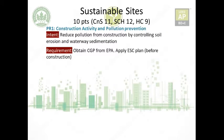PR1 is Construction Activity and Pollution Prevention. The intent is to reduce pollution from construction by controlling soil erosion and waterway sedimentation. At a construction site there is a lot of dust, cutting — metal cutting, wood cutting — and if it is a large site, a lot of water is used to cool down equipment. Without a good plan, contaminated water can leave the site, so you need a system to collect and contain all the pollution produced by on-site activities.